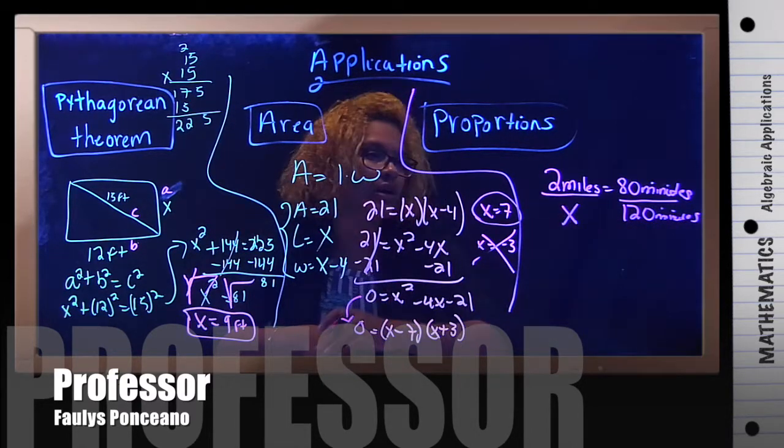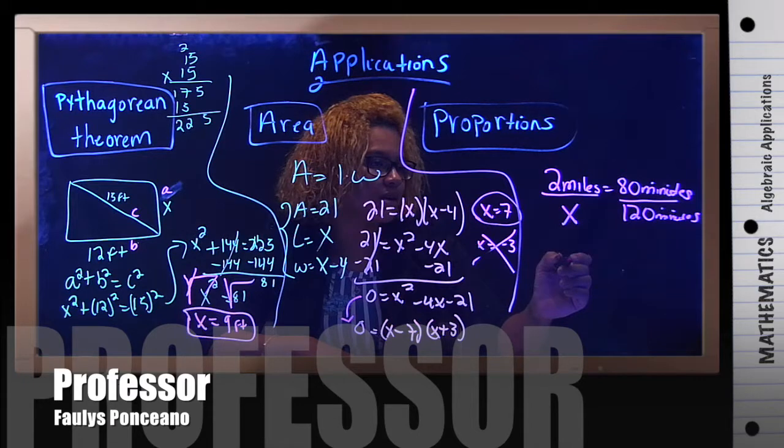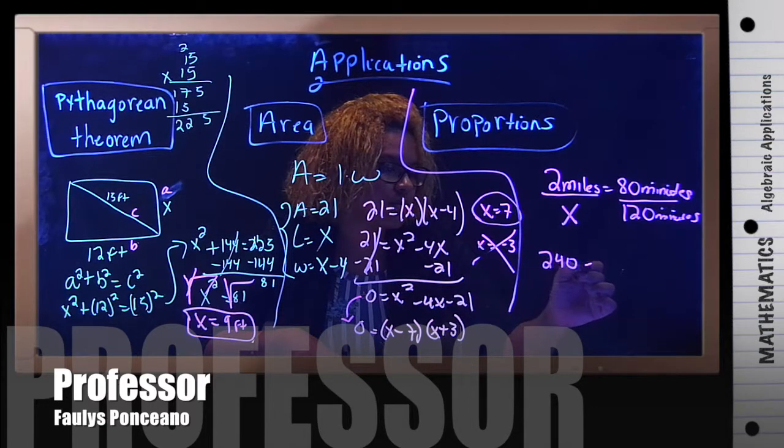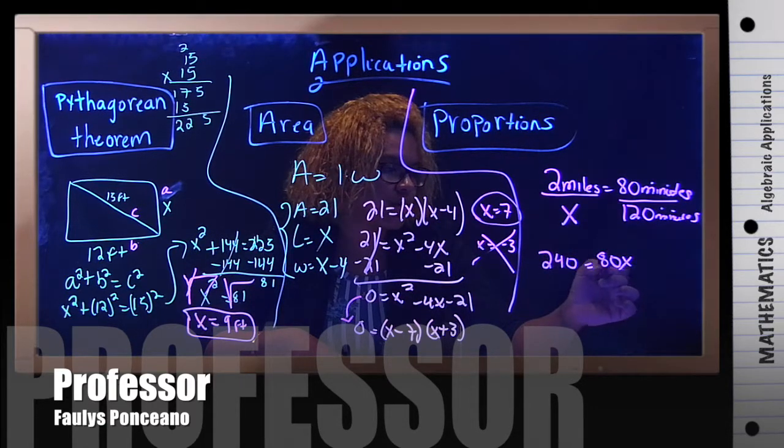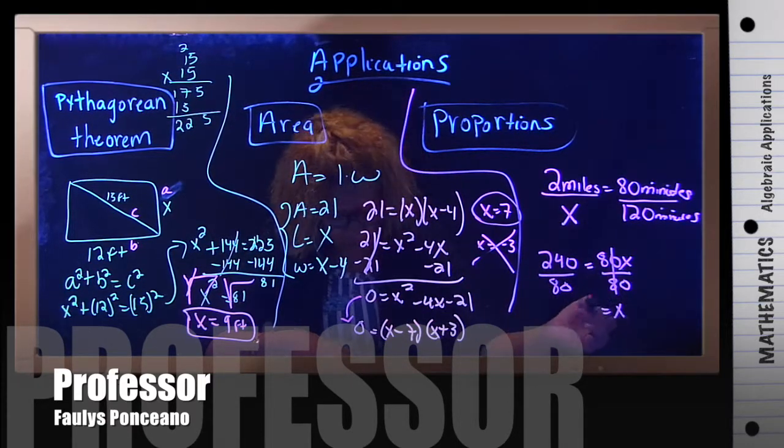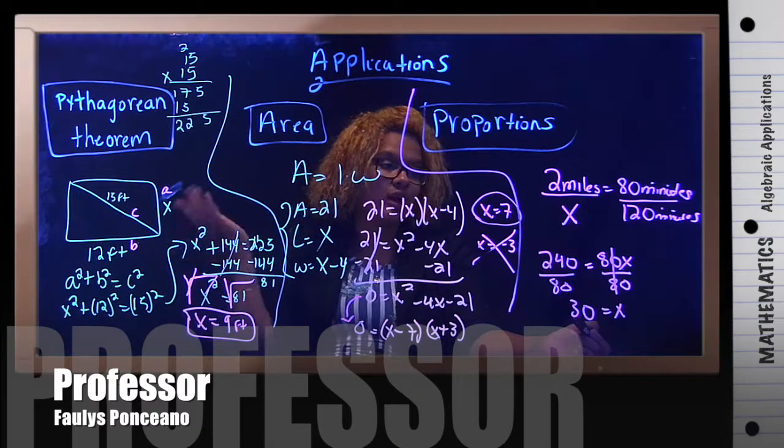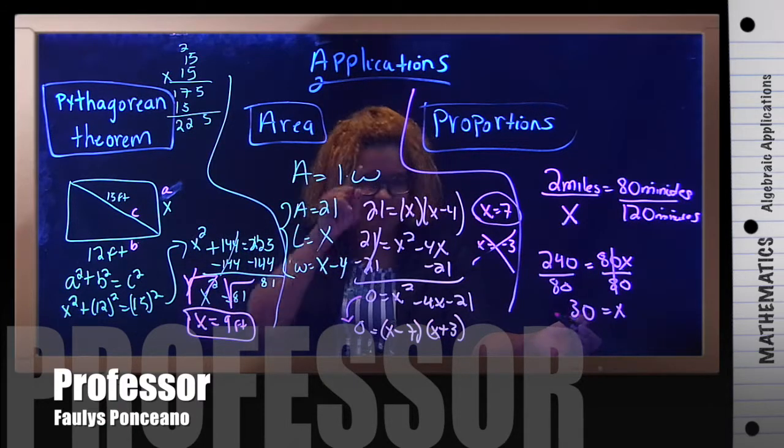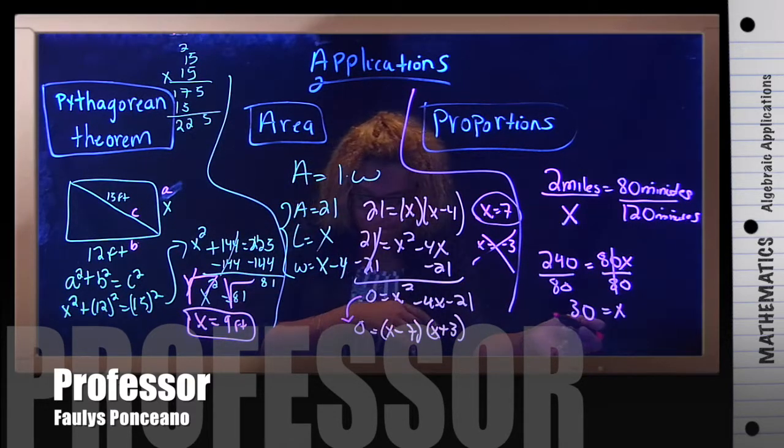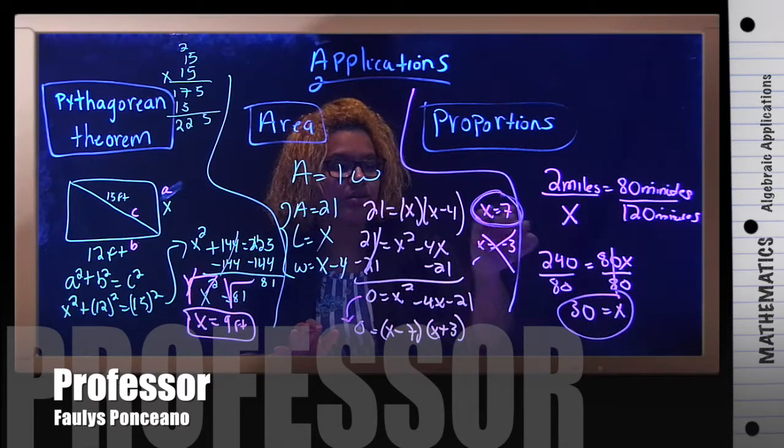So, what are we looking for? Miles. Well, we're simply going to cross multiply. And this gives me 240. 240 miles equals 80x. We're going to divide both sides by 80. X equals 3. So, in 120 minutes, she can walk 3 miles. And this is the answer for this application. This right here is the answer for this one. And this over here is the answer for that one.